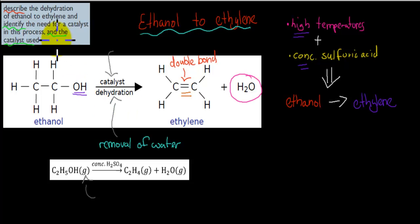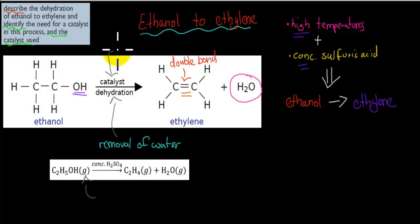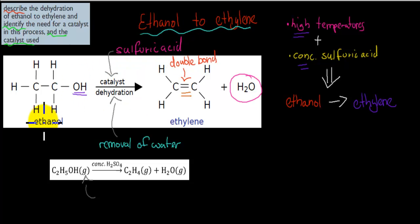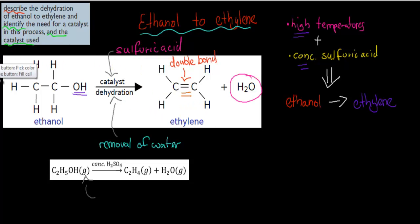It also says identify the need for a catalyst in this process and the catalyst used. The catalyst is sulfuric acid. The reason why we need a catalyst is that by itself, ethanol does not turn into ethylene — the conditions have to be right. We need that catalyst because otherwise the reaction wouldn't go ahead by itself.